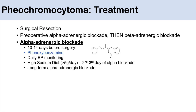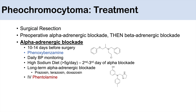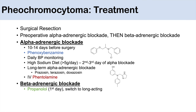If longer-term alpha-adrenergic blockade is needed beyond 10 to 14 days, more selective alpha blockers like prazosin, terazosin, or doxazosin are used. For perioperative management, IV phentolamine can be used. Once effective alpha-adrenergic blockade is achieved, beta-adrenergic blockade follows — starting with propranolol on the first day, then switching to a long-acting beta blocker.